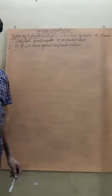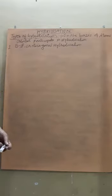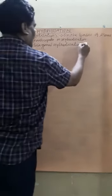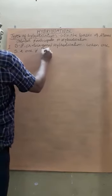Yes students, the next content is types of hybridization on the basis of atomic orbitals that participate in hybridization to produce some number of hybrid orbitals. First one is SP or diagonal hybridization, when one S and one P atomic orbitals of the same shell intermix their energy.